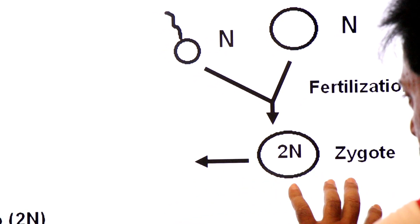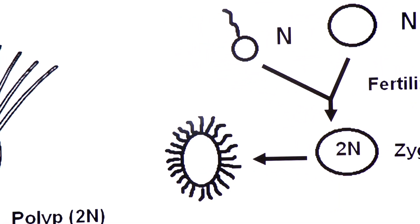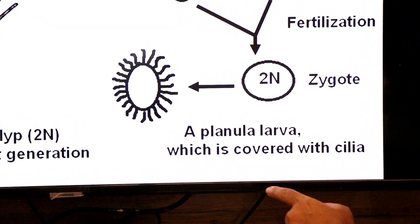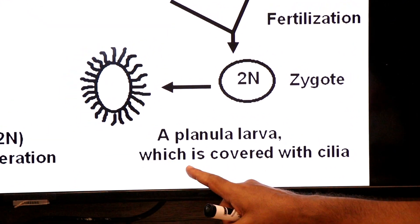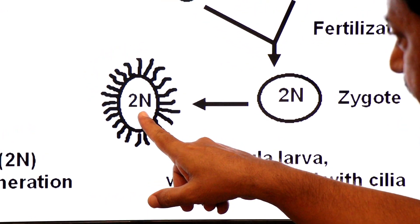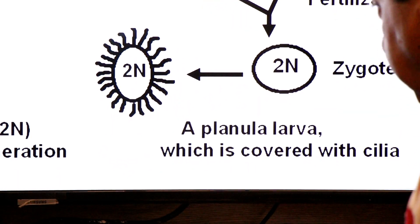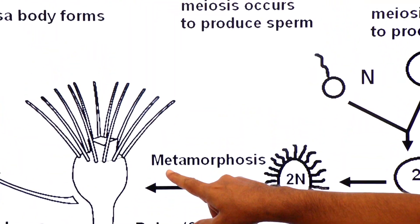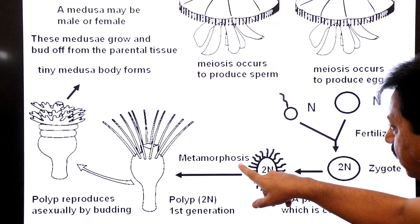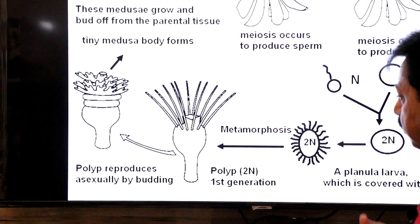After fertilization, the zygote develops into a larva whose body is covered with many cilia — this is called a planula larva. The planula larva is also diploid. This planula larva then undergoes metamorphosis — a change in shape/form — and again develops into a polyp stage.